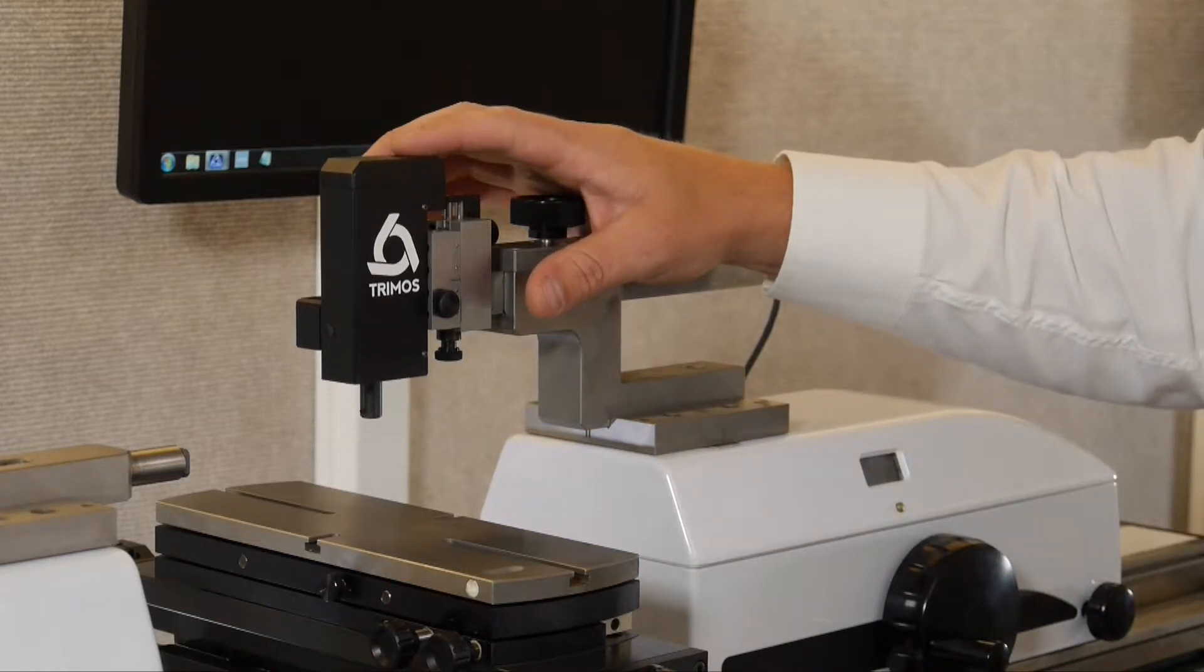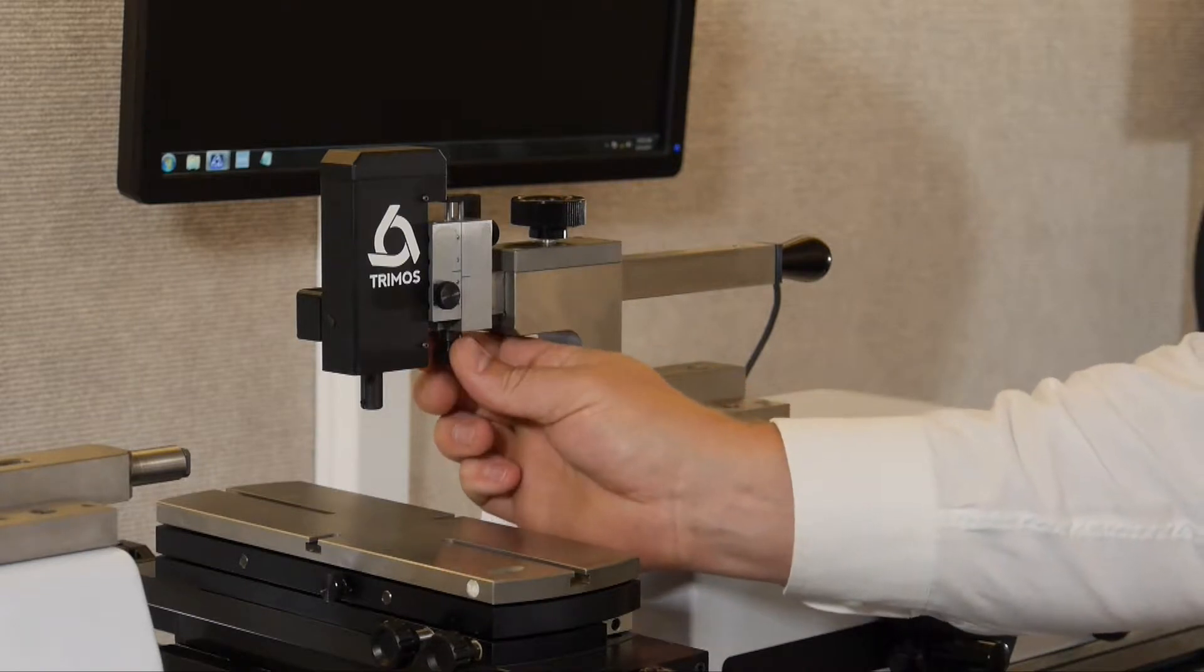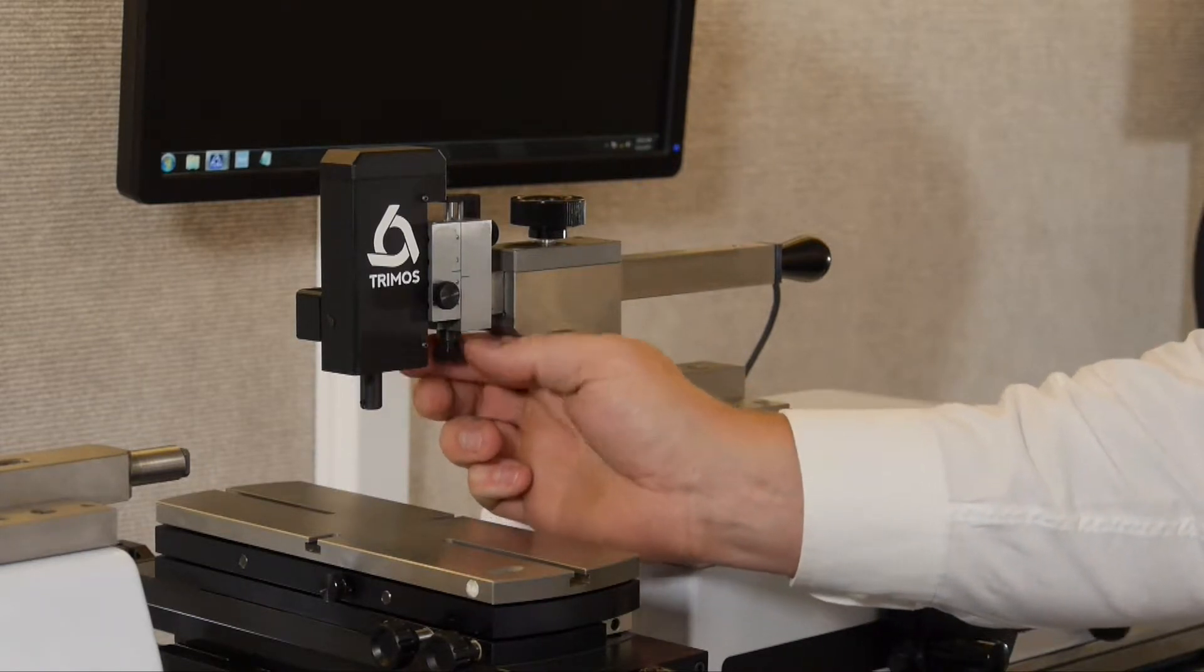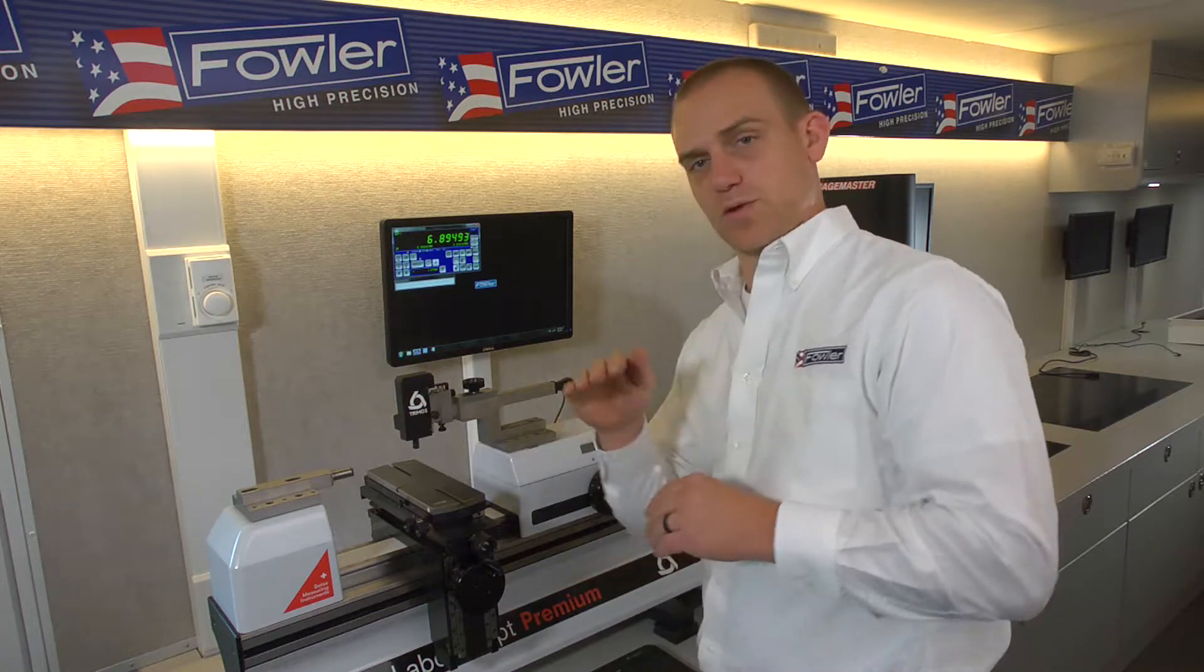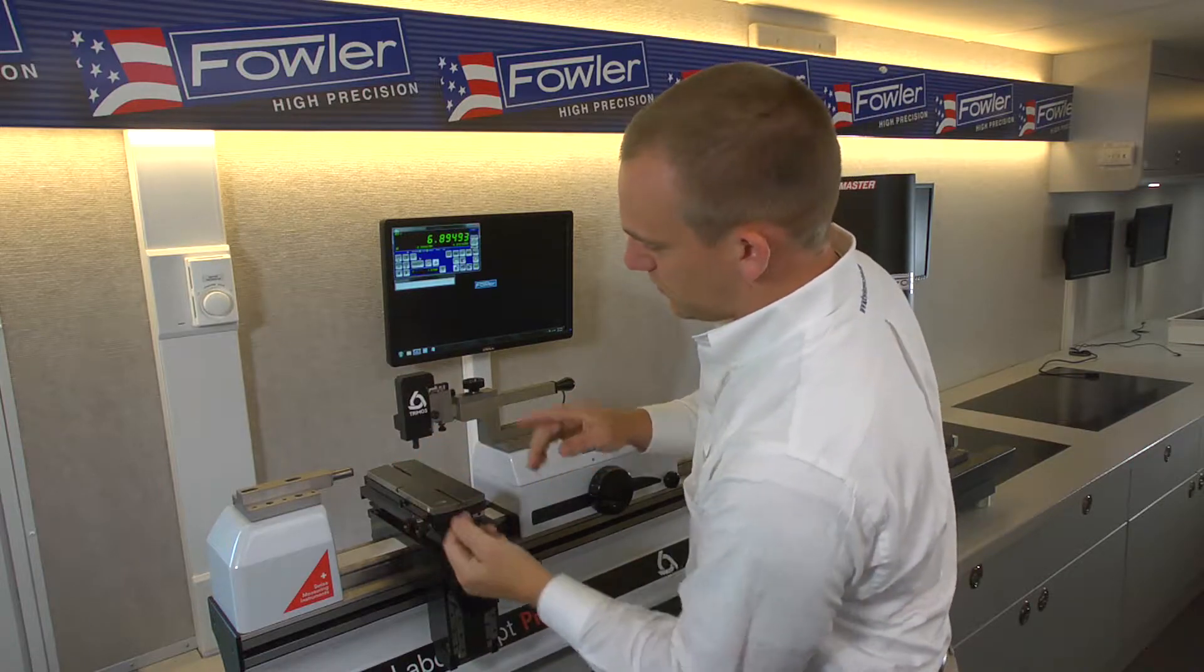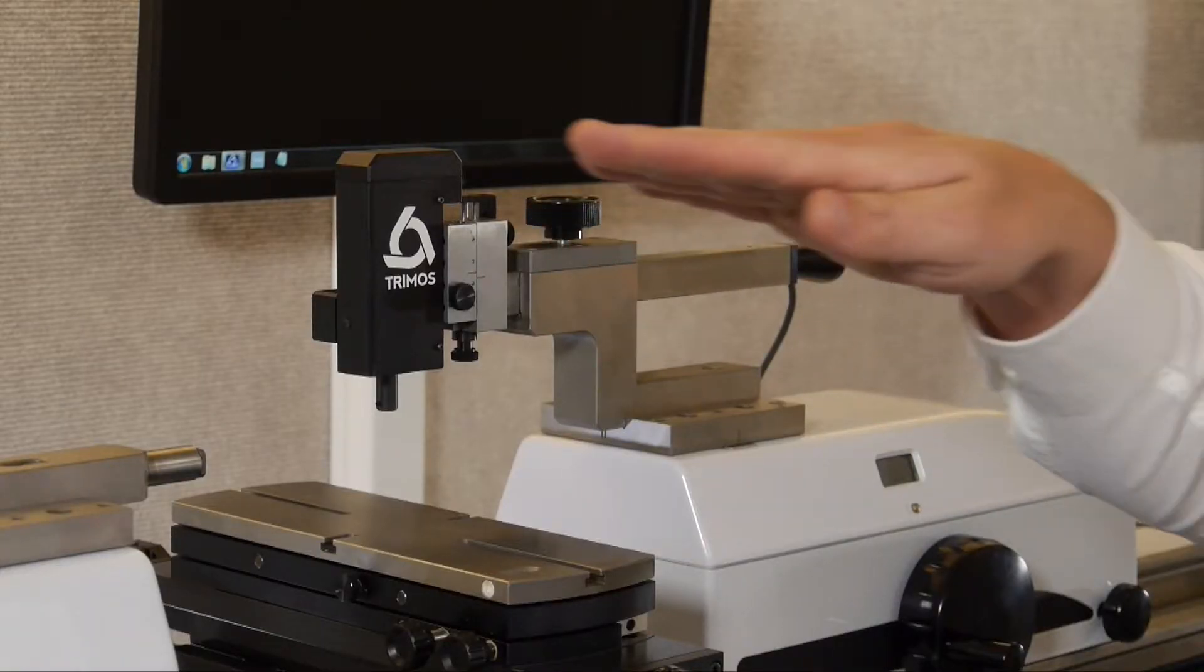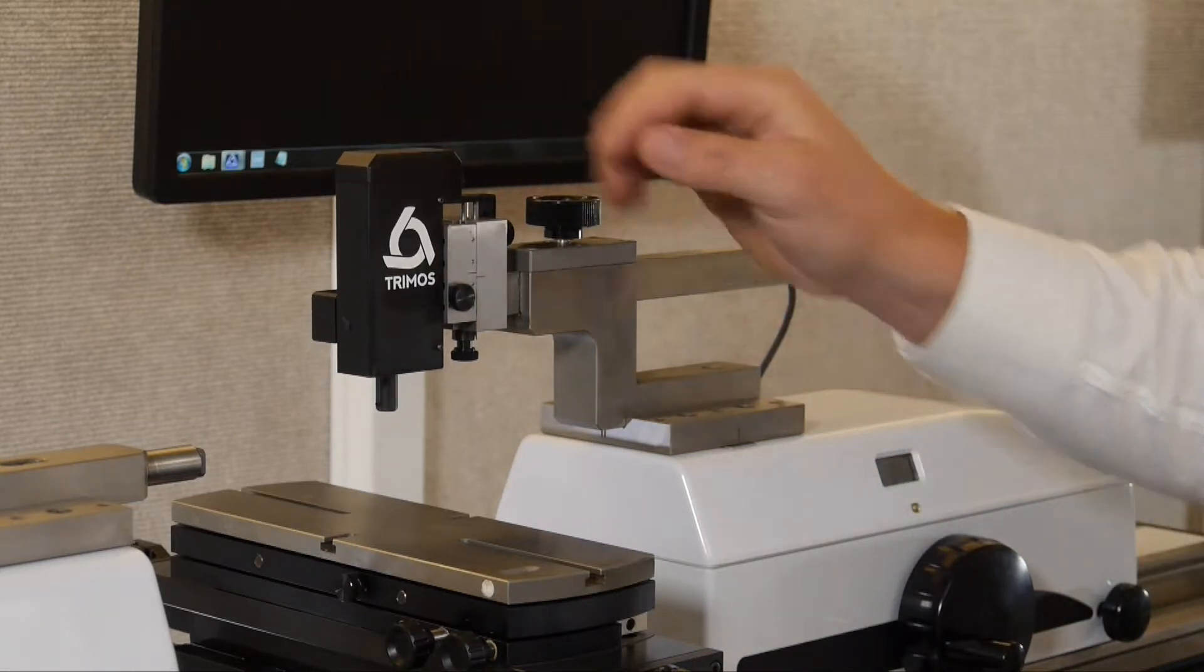So you may have noticed this has a spring to float on. Now the reason it does that: for internal thread rings, you would use a T-shaped ball and the ball has to slot into the thread form. So in order to find dead center on whichever thread you are measuring, you want this to be able to float a little bit.